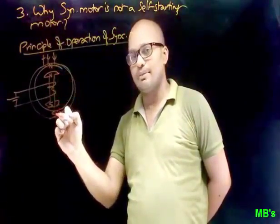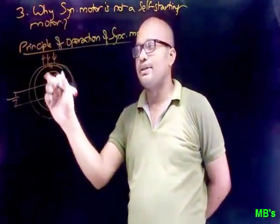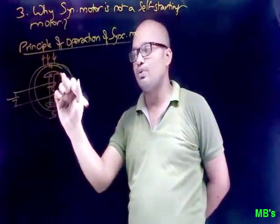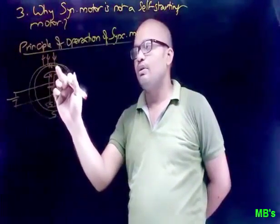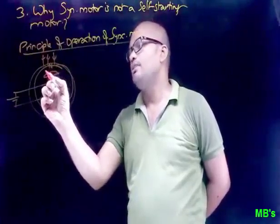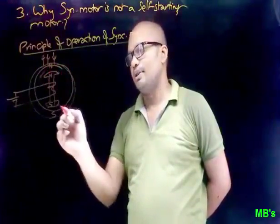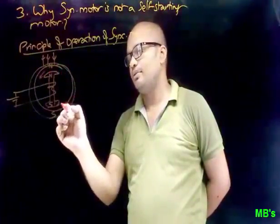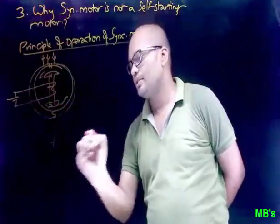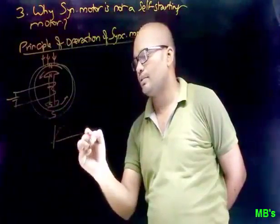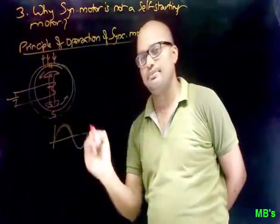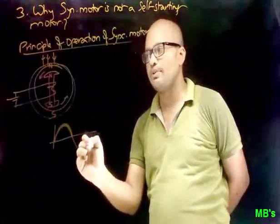We know that like poles will repel and opposite poles will attract each other. As like poles are here, they will repel. Since the stator is the static part and the rotor is the moving part which is free to rotate, because of repulsion the rotor will repel in this direction. This is the case when the input supply is in the first half period, and in the next half cycle of input supply,